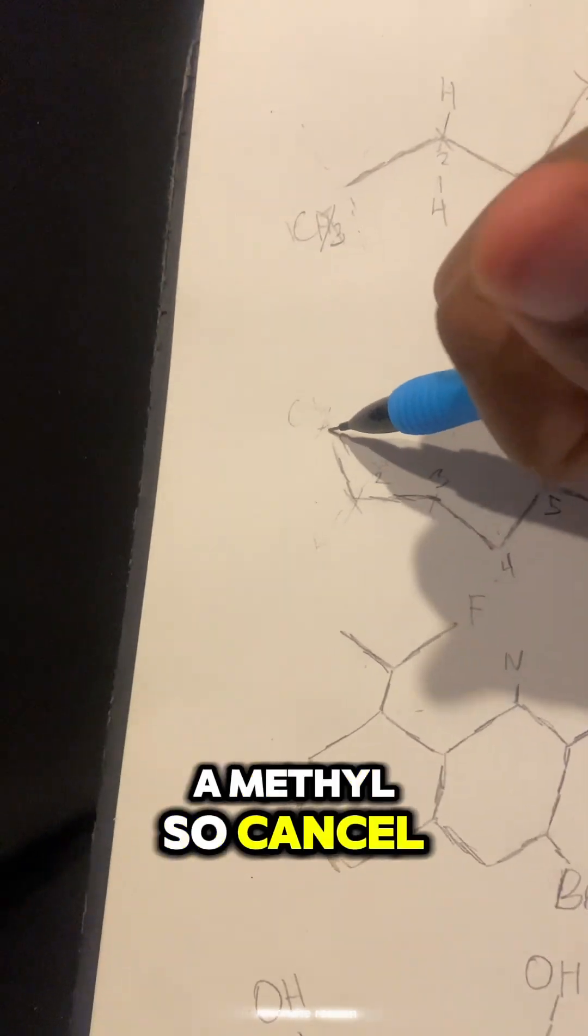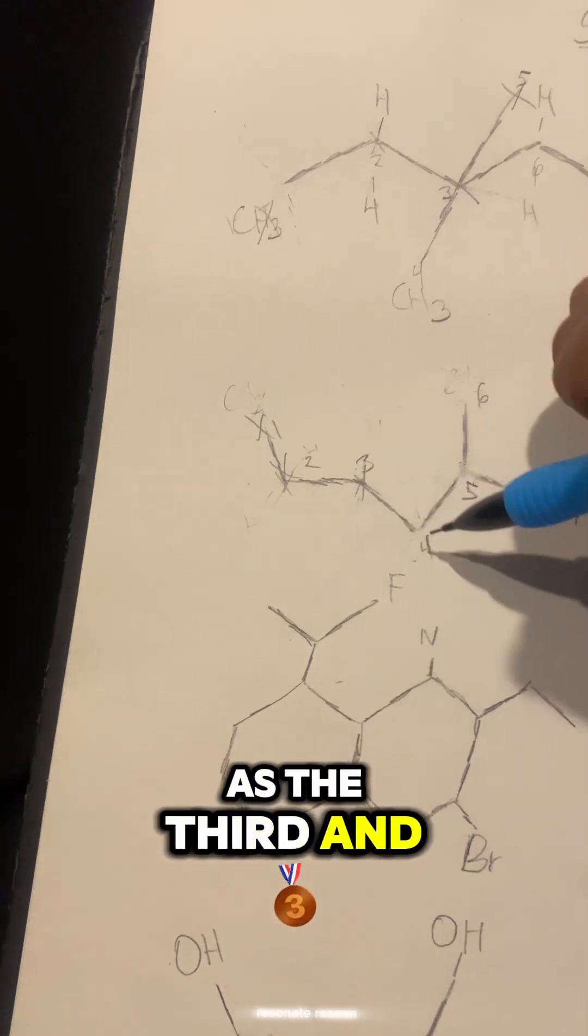We know the first one is a methyl, so cancel that out. The second one is going to have two hydrogens attached, one right here, one right here. Cancel that out. Same as the third, same as the fourth.